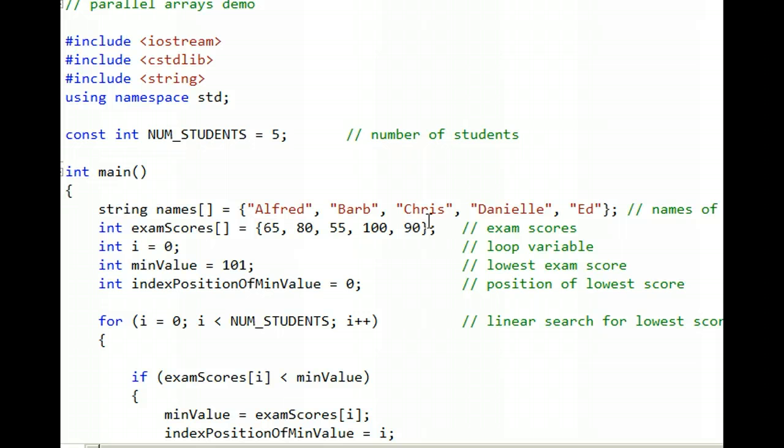Let's do that with our human eyeballs. First, scanning from left to right, i equals 0, and 65 is a low score, so I remember that. 80 is not lower than 65, so I'm still remembering the 65. Whoa, 55. It's lower than 65. So it's now my lowest score that I see from left to right.